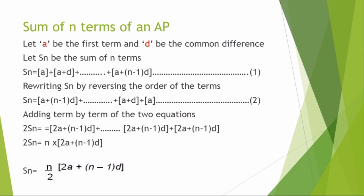The first term is A, the second term is A plus D, the third term is A plus 2D, the fourth term is A plus 3D. Then we write the last term. The last term is A plus (N minus 1) into D.